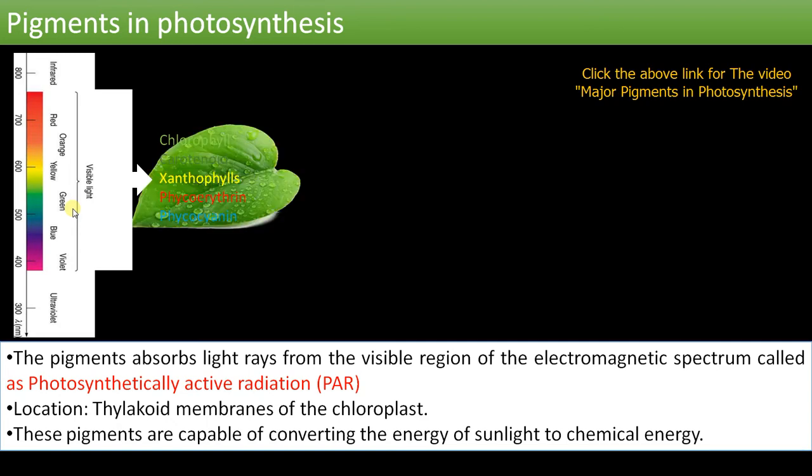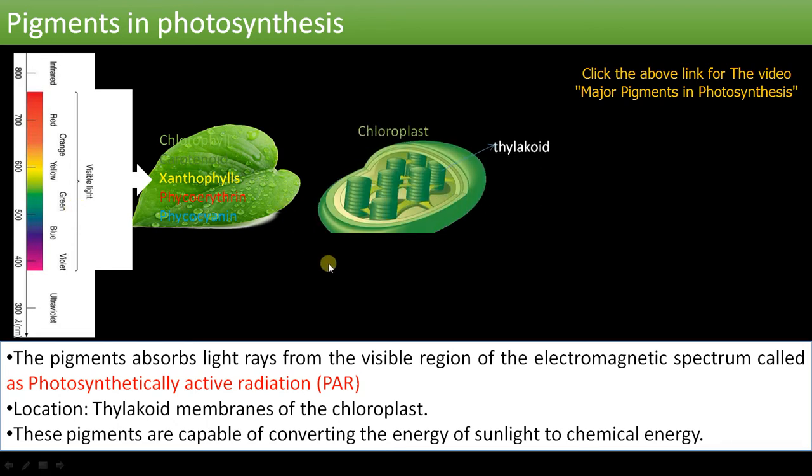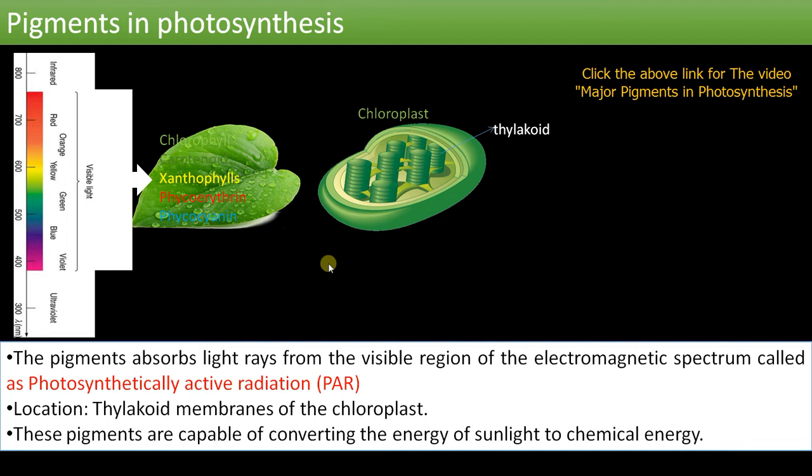These pigments are present in the organelle chloroplast that is involved in photosynthesis. The stacked structure is called grana, and the individual unit is called thylakoid. Let us zoom into this thylakoid.